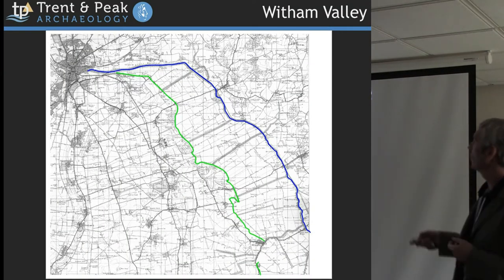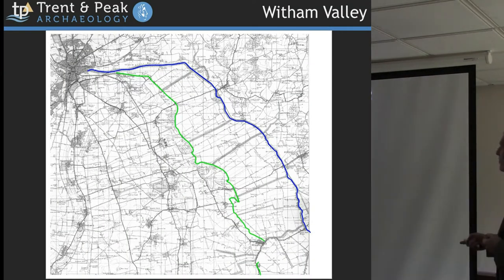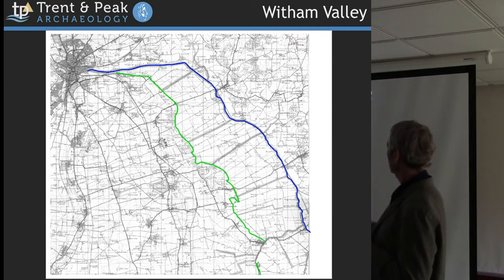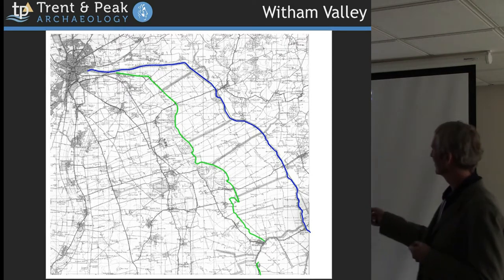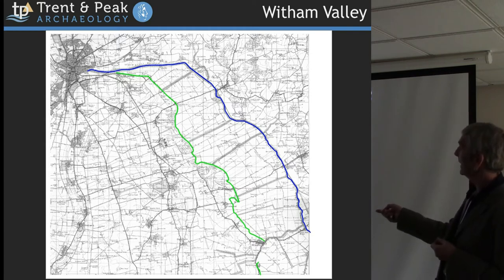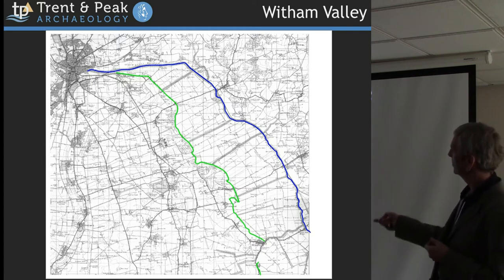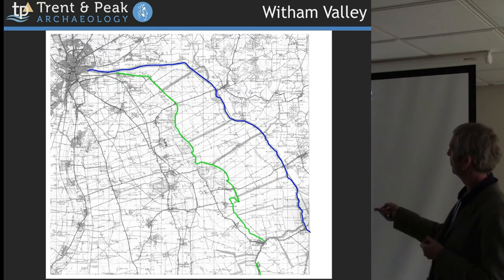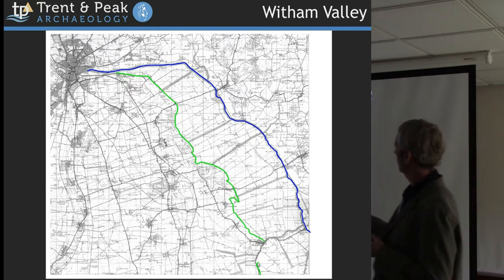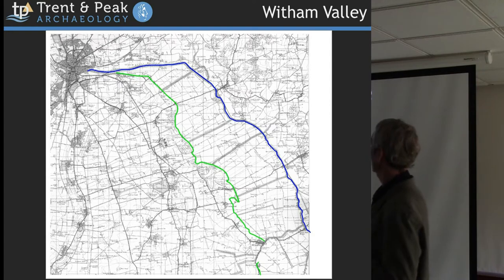Zooming in a bit, we go up the Witham Valley — a strange valley. Post-glacial meltwater carved the Lincoln Gap through the limestone escarpment and then scoured out this wide valley. The river does a very unnatural thing — it's hugging the side of the valley. The other side is the Roman Car Dyke, flanking the other side of the valley.